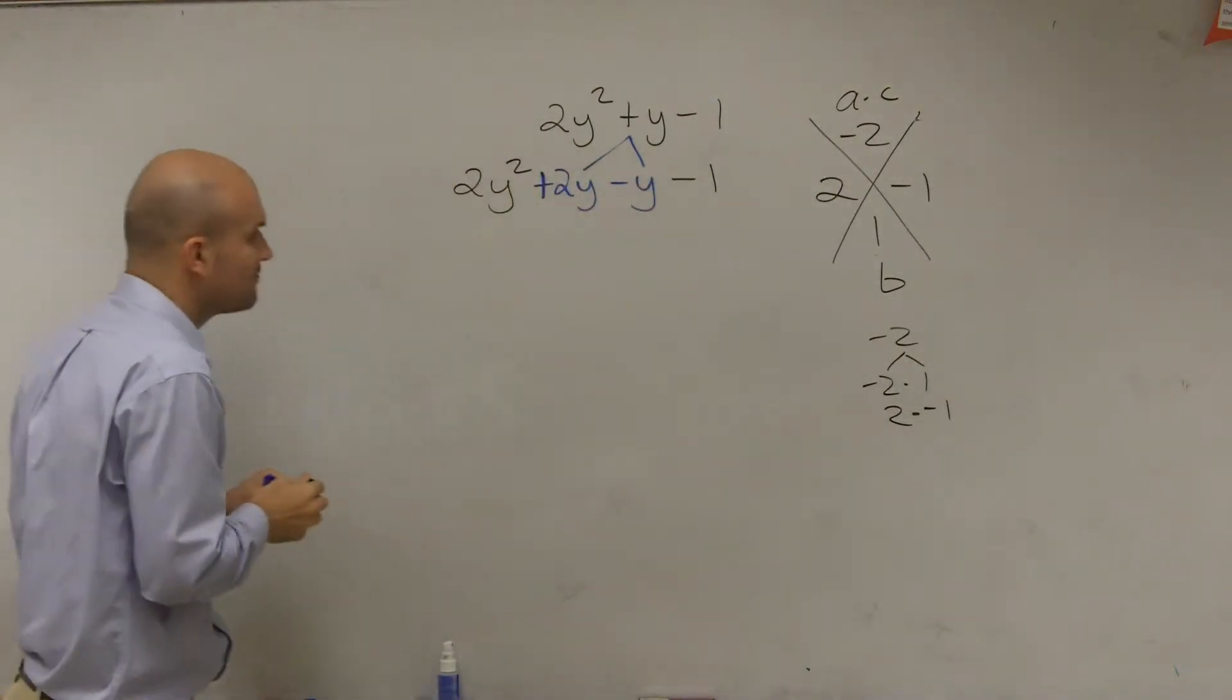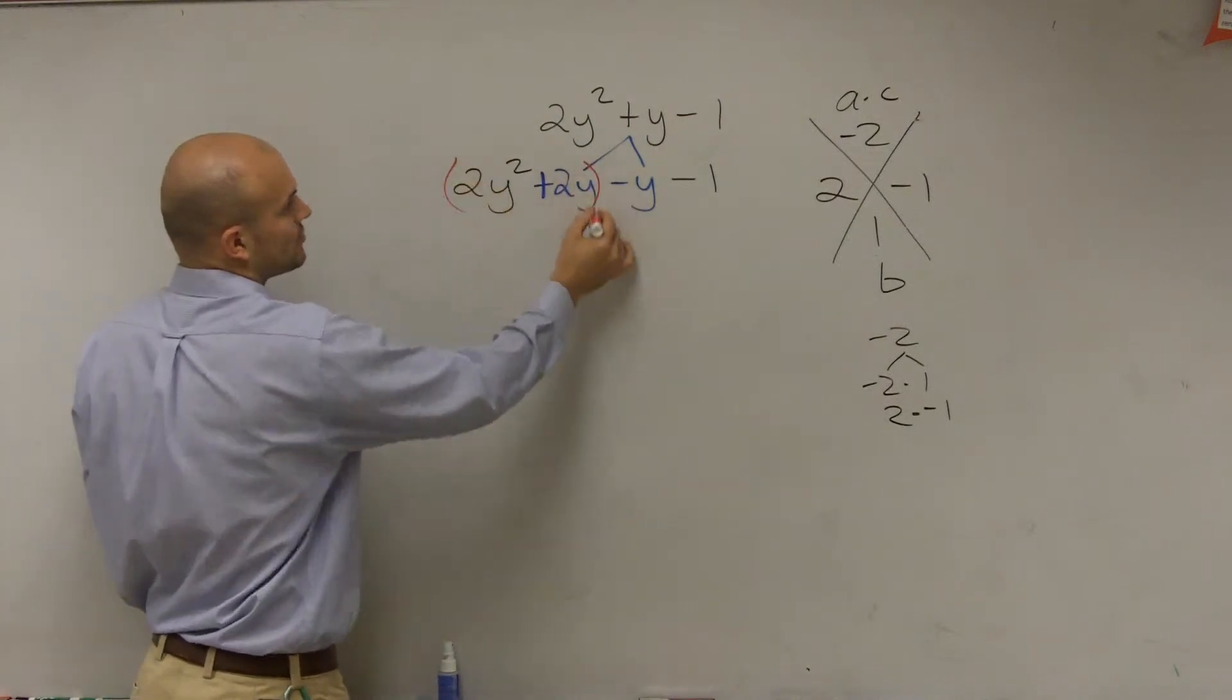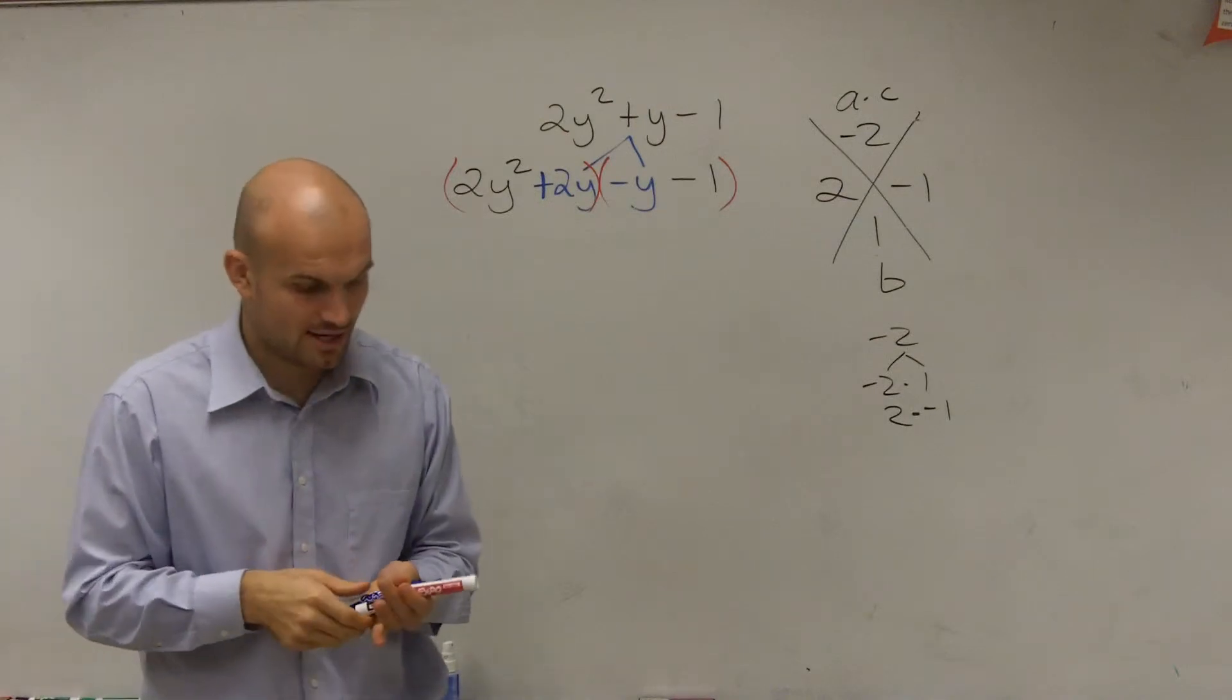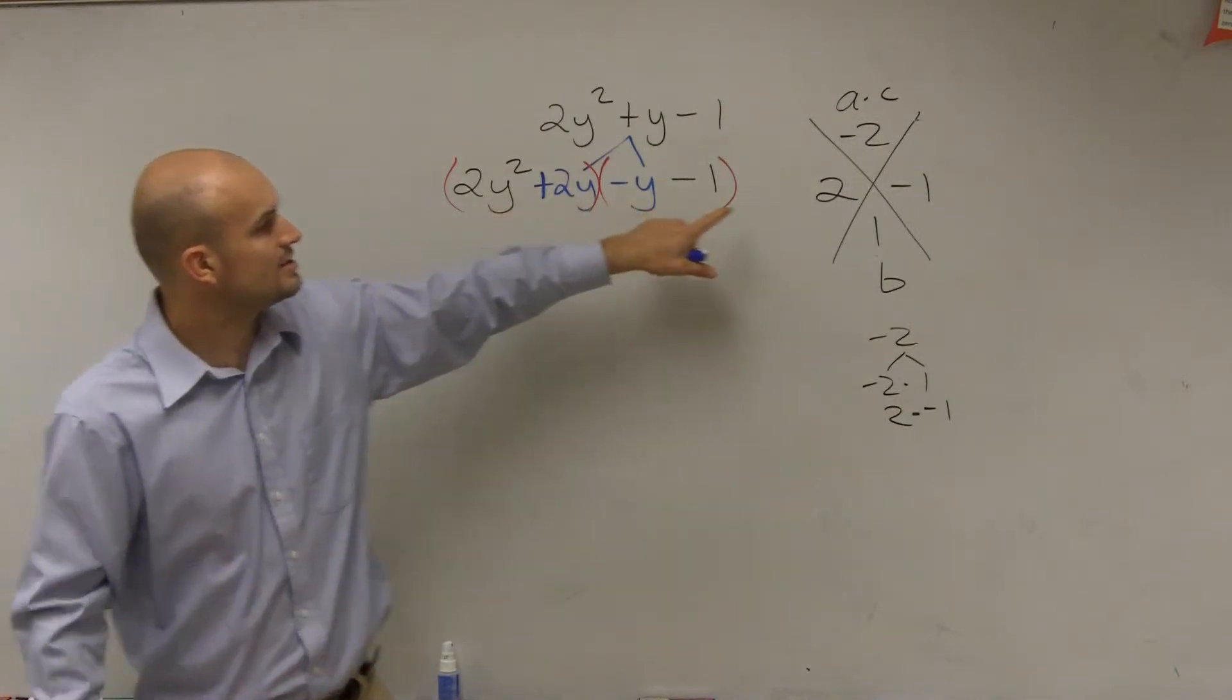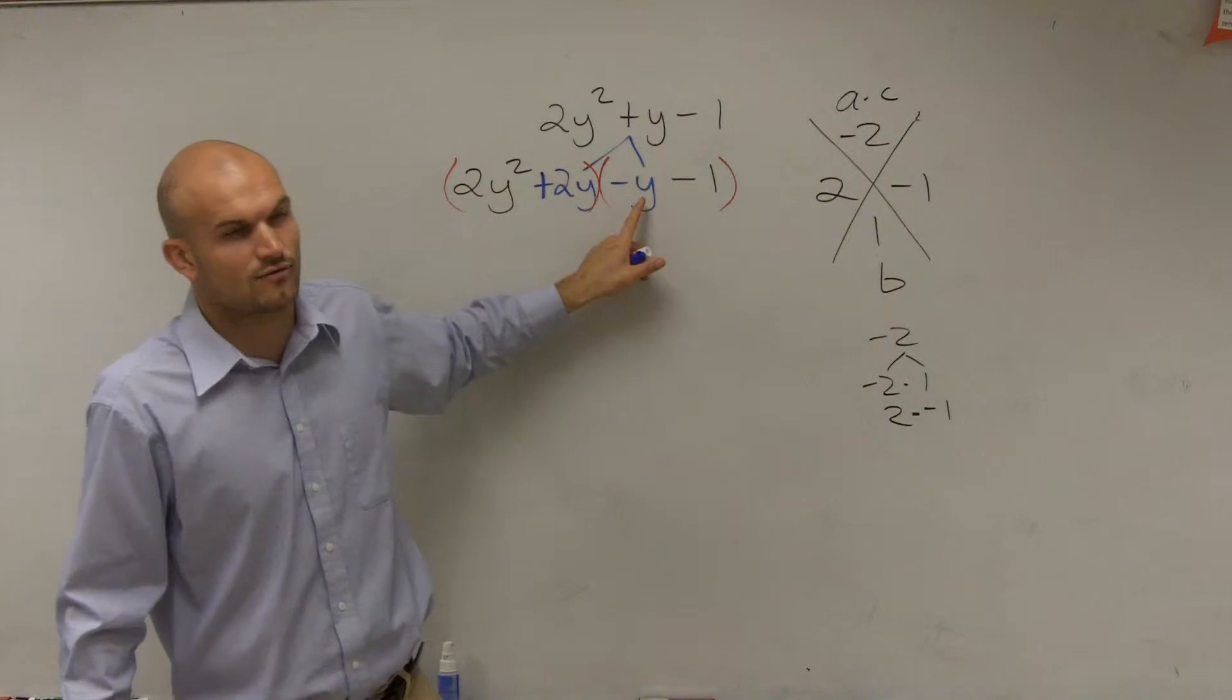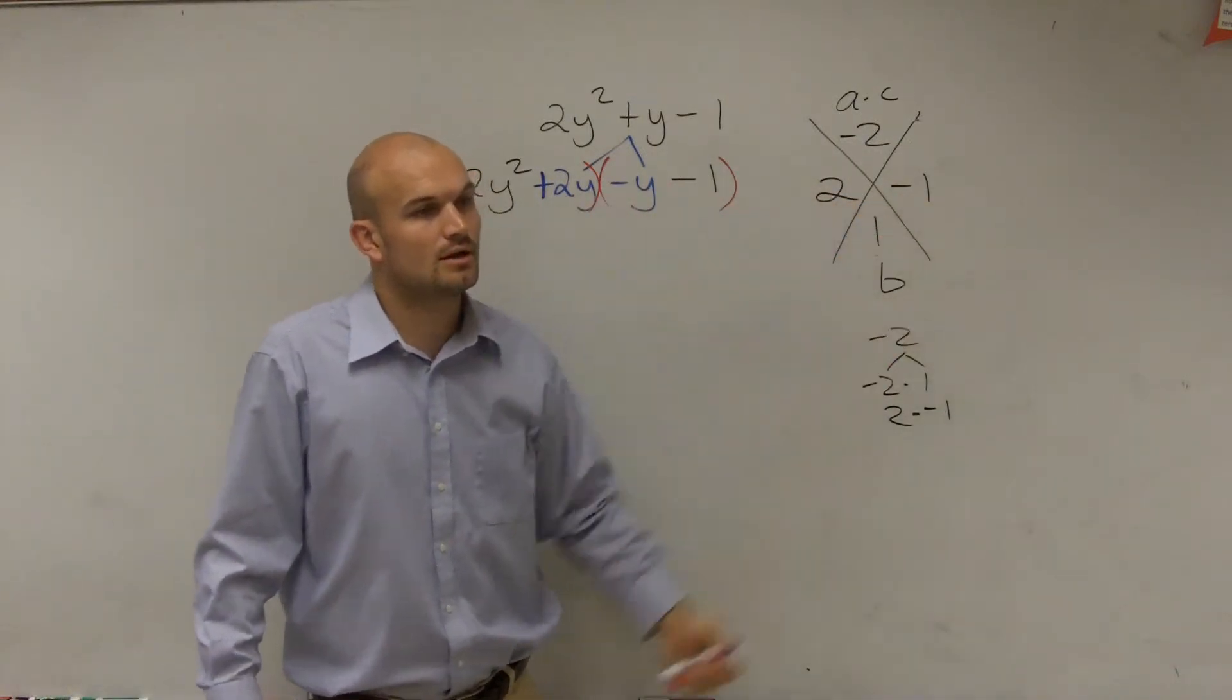Now what I do is, since I have four terms, I need to factor by grouping. So what I do is I group the first two terms and I group the last two terms. Right, this is the factoring by grouping that we worked on. How did you get 2y minus y? That's positive 2y, and then that's the negative 1y, which is just negative y. So I took my two factors as my middle terms.